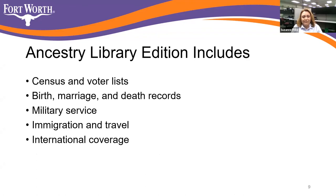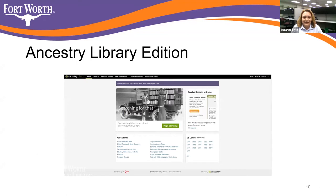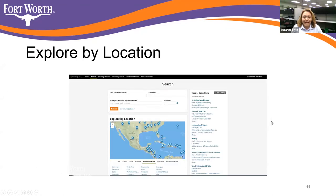Ancestry includes census and voter lists, birth, marriage and death records, military service, immigration and travel, and international coverage. In honor of Hispanic Heritage Month, we're going to look at Mexico specifically. Here is the first screen for Ancestry — you can click on 'begin searching.' You can also explore by location using an interactive map. I've brought up the page about Mexico, and you can click on any of those pinpoints for more information. Ancestry has coverage from many countries throughout the world and all 50 states.